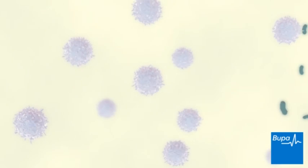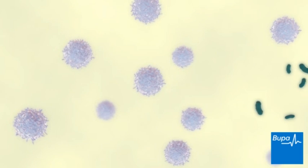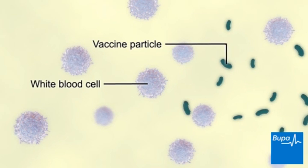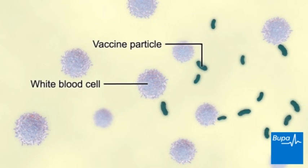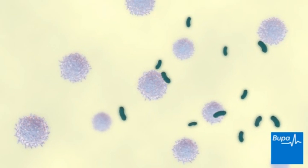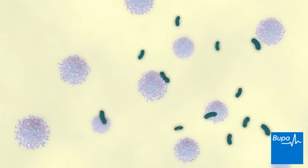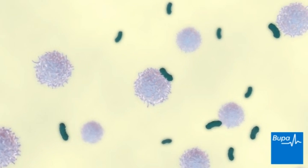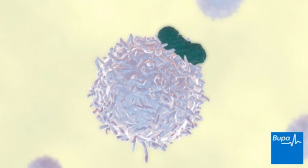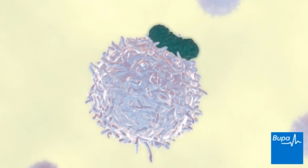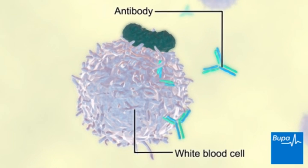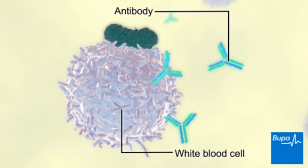Once the vaccine is injected, your white blood cells respond to it. Your white blood cells make antibodies to the vaccine particles. These can provide you with an increased resistance to the bacterial disease.